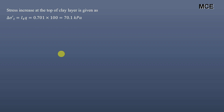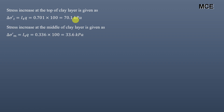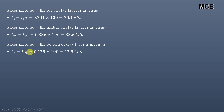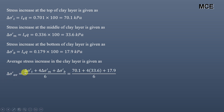The stress increase at each point equals the influence factor multiplied by the stress increase at the base of the footing (100 kPa). At the top of the clay layer: 0.701 × 100 = 70.1 kPa. At the middle: 0.336 × 100 = 33.6 kPa. At the bottom: 0.179 × 100 = 17.9 kPa. Using Simpson's formula, the average stress increase is (σ_top + 4×σ_middle + σ_bottom) / 6 = 37.1 kilopascals.